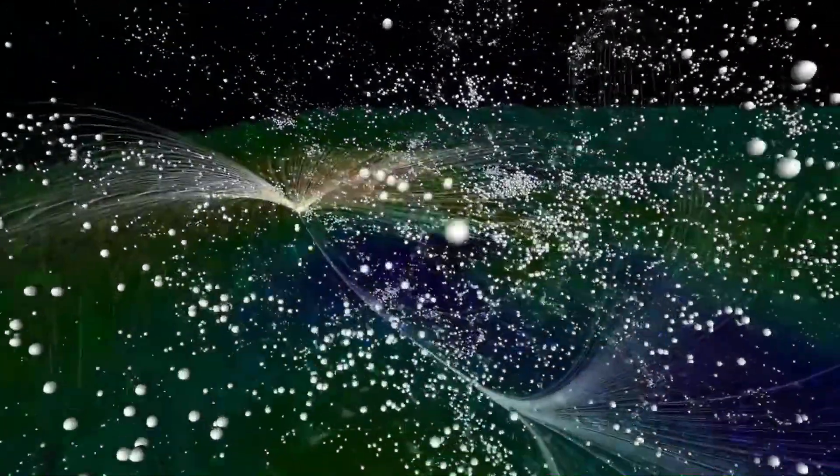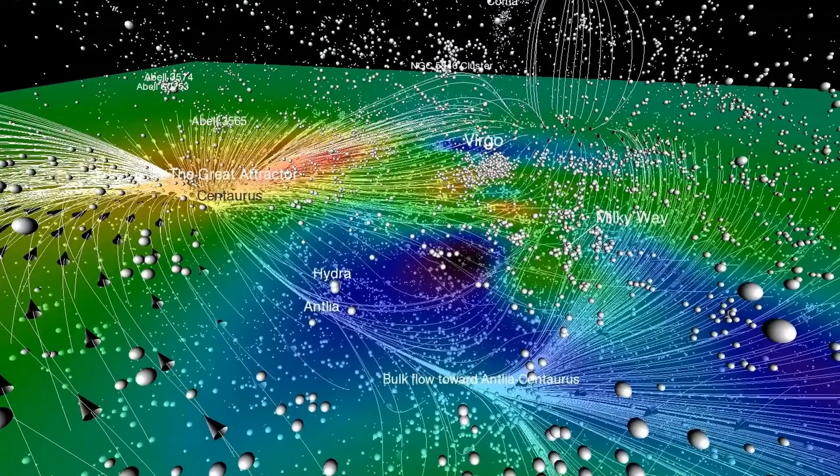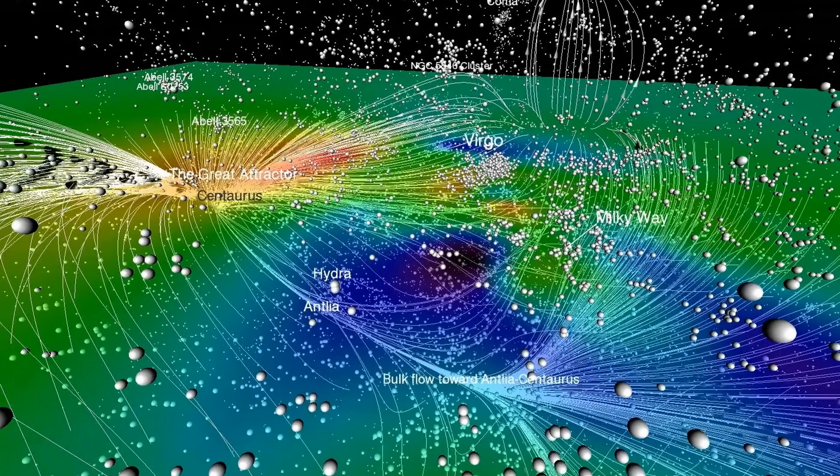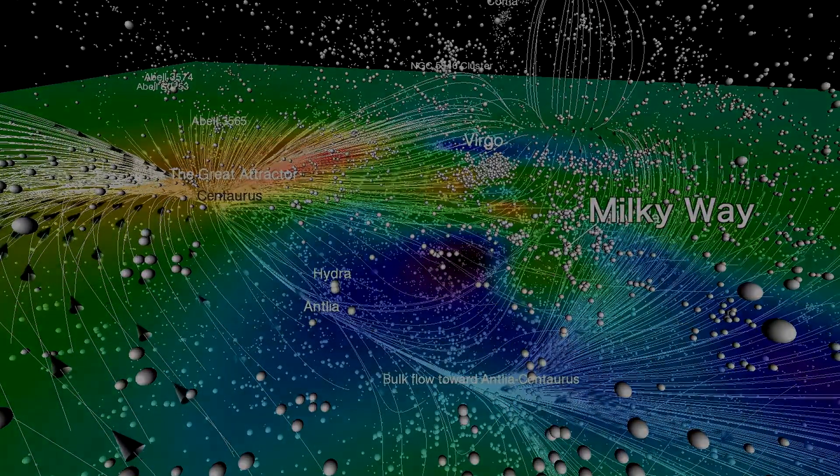One of the most intriguing aspects of the Great Attractor is its size. Studies have shown that the Great Attractor is much larger than previously thought, spanning a distance of at least 250 million light-years. This makes it one of the most massive structures in the universe.